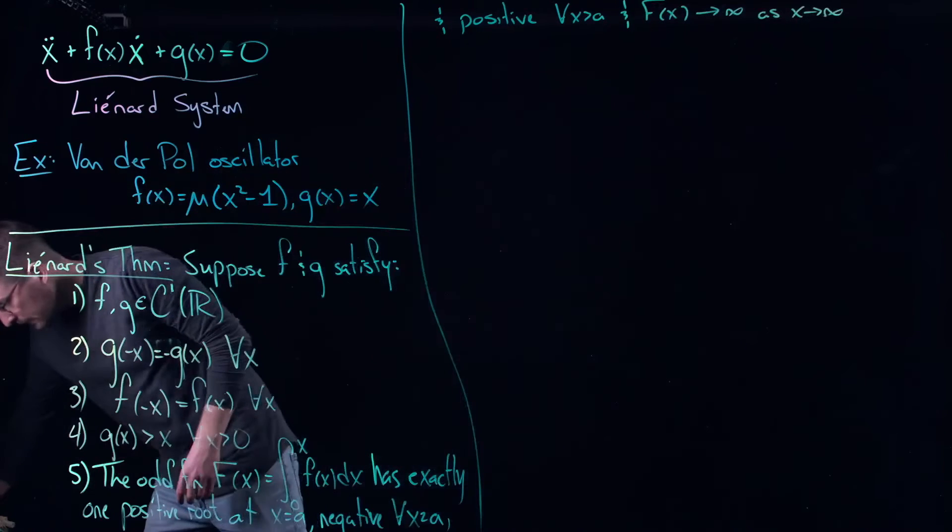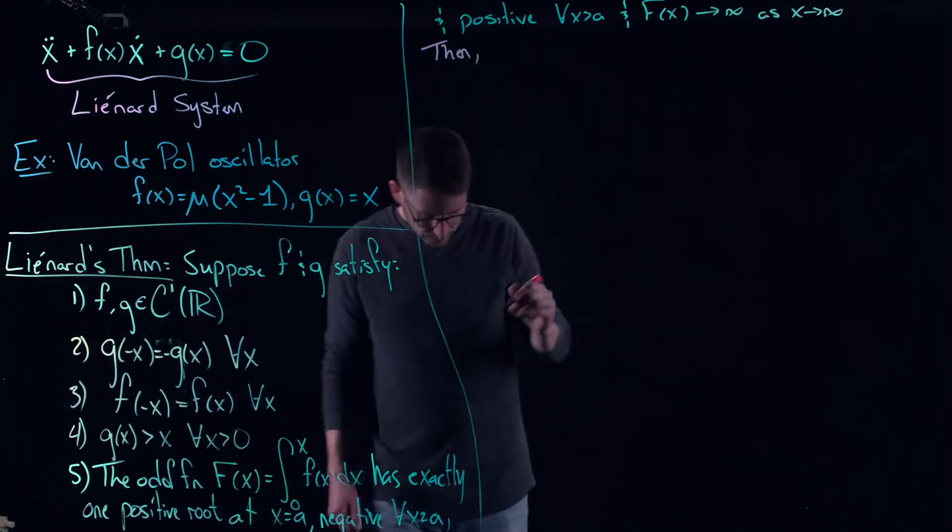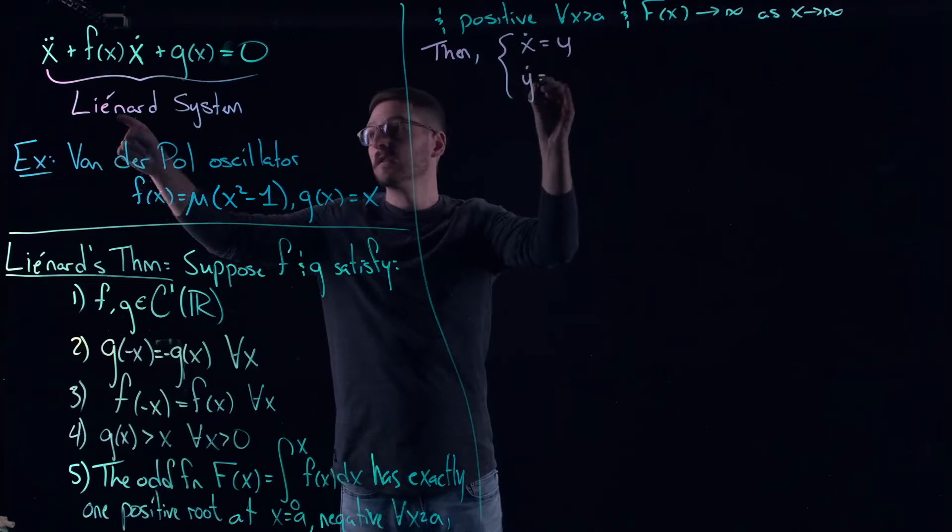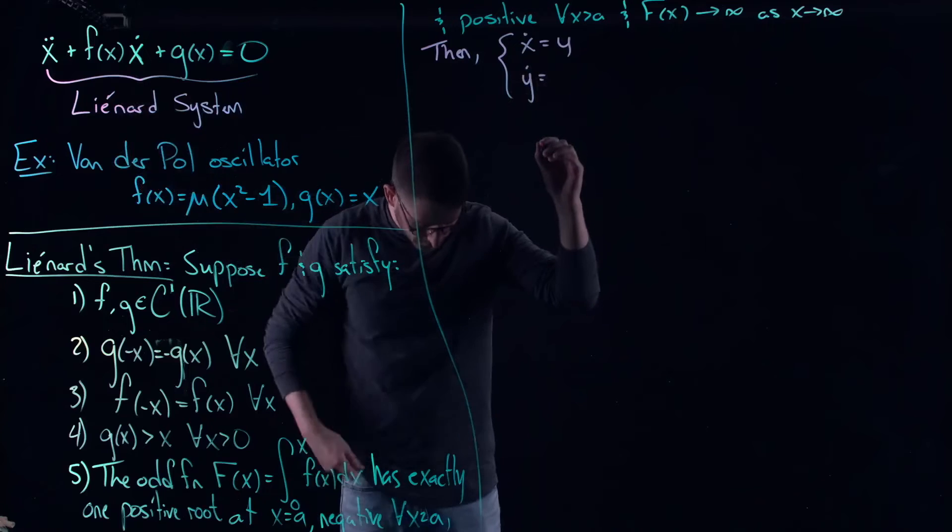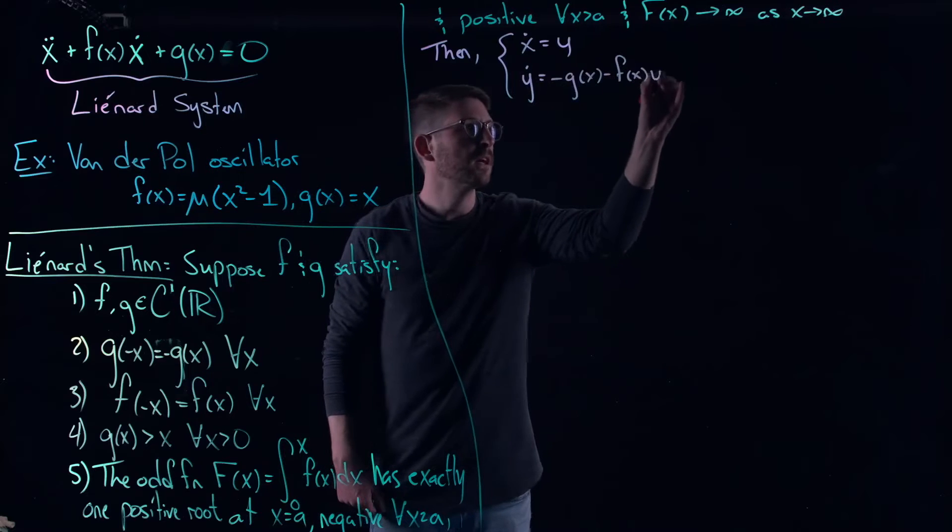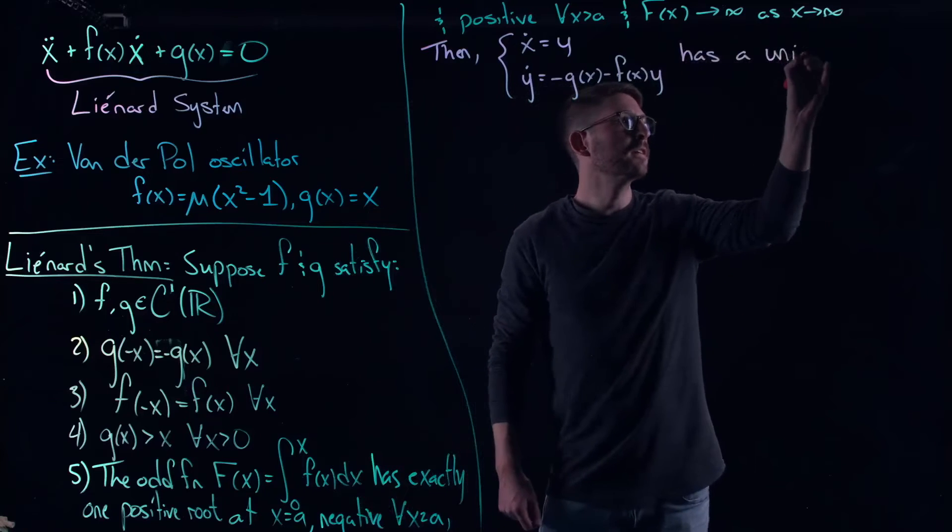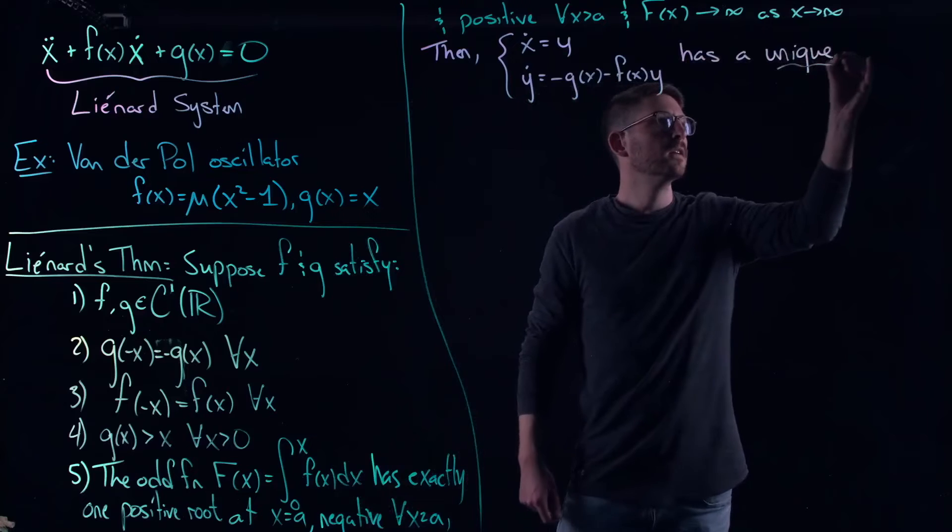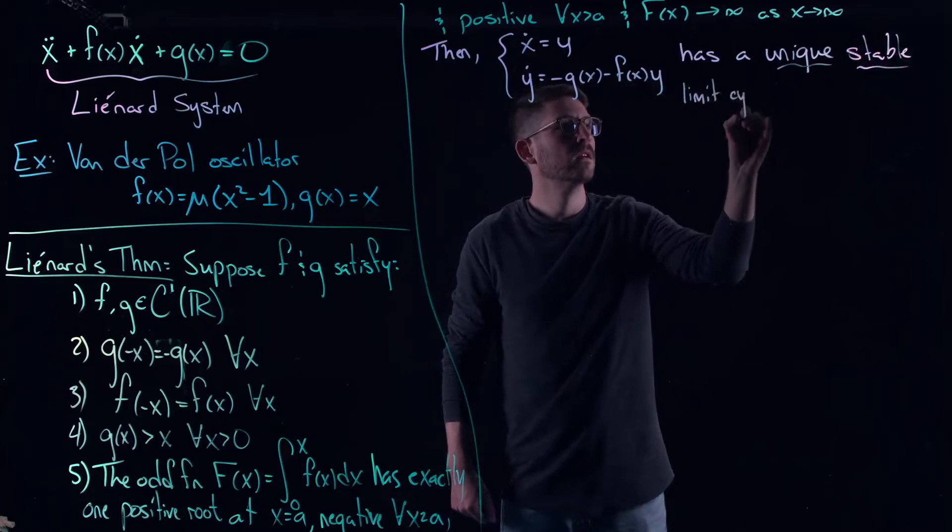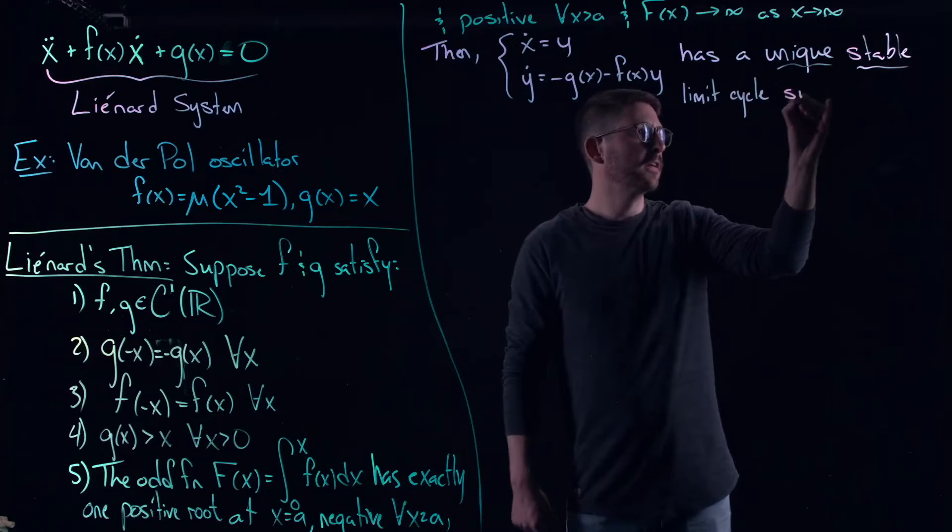Okay so this one's obviously a little bit more complicated but what does Liénard tell us? Well he says that then this planar dynamical system that comes from just turning this second order system, this second order equation into a first order system, so let's write it: ẋ = y, ẏ = -g(x) - f(x)y, has a unique, that's interesting there's only one, stable, that's also interesting, limit cycle.